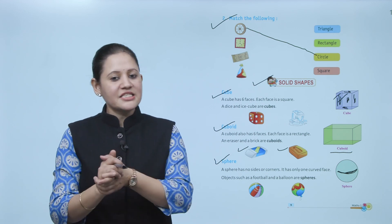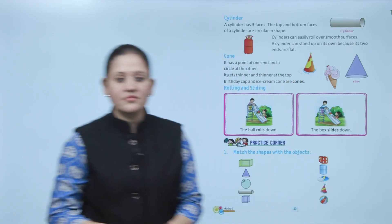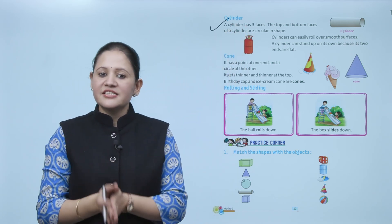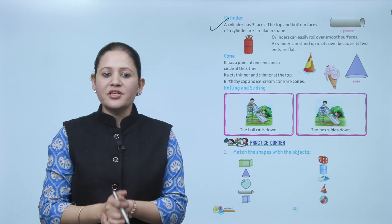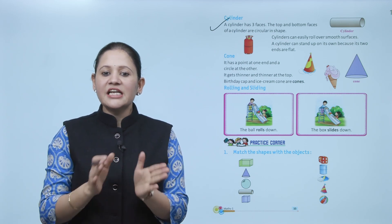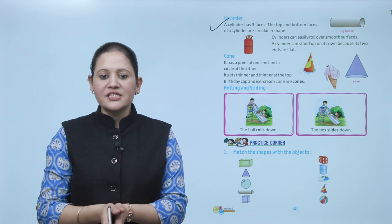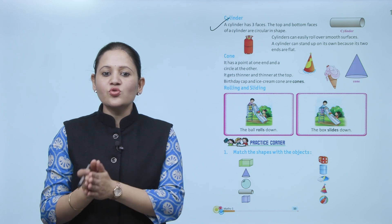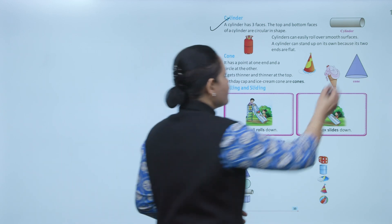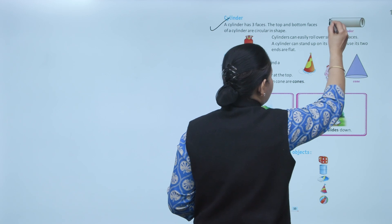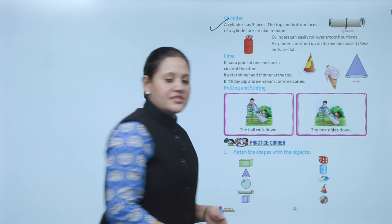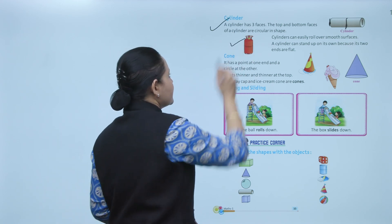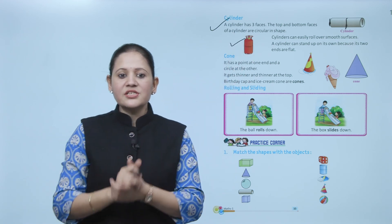Next is cylinder. A cylinder has three faces. The top and bottom faces of the cylinder are circular in shape. A cylinder can easily roll over a smooth surface and can stand up on its own because its two ends are flat. It has three faces — the top, the bottom, and the curved surface. A gas cylinder and a pipe are of cylinder shape.